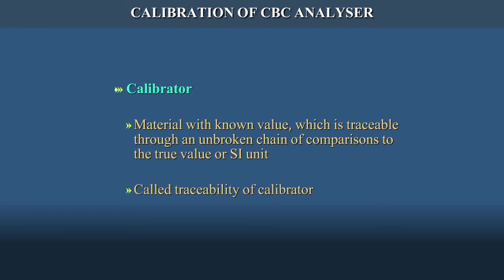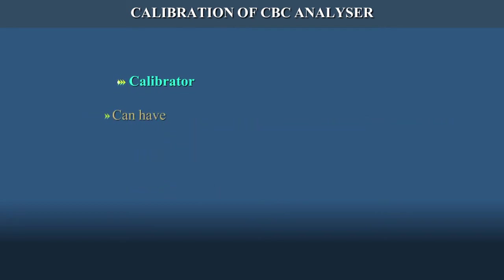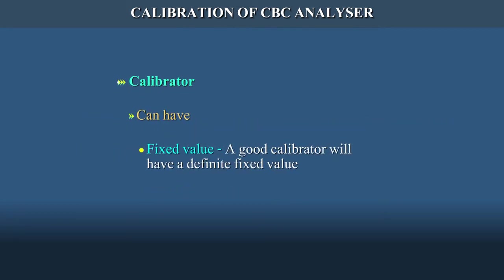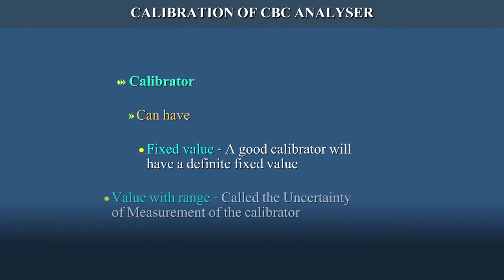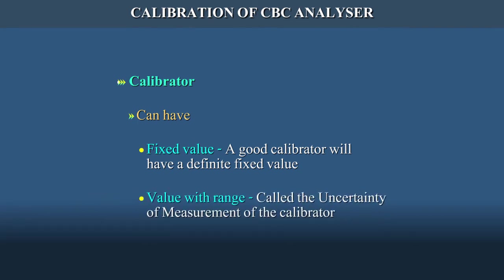This is called traceability of calibrator. The calibrators can either have a fixed value — a good calibrator will have a definite fixed value — or a value with range, as is the case with this machine. This is called the uncertainty of measurement of the calibrator.